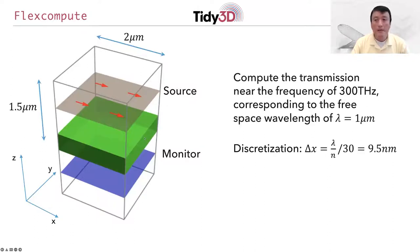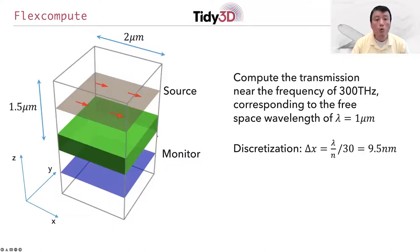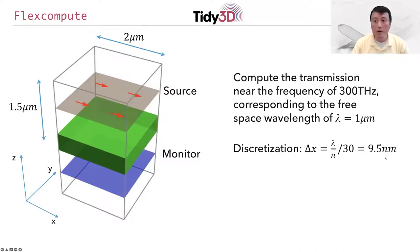However, in the next video we're going to use the same computational domain to simulate a photonic crystal slab structure, which has more complexity in the in-plane direction. So the xy dimension here is chosen with a future calculation in mind. We would discretize the computational domain in terms of a grid cell, and in our case we choose a discretization so that each grid corresponds to a linear dimension of about 10 nanometers. That turned out to be sufficient to get the accuracy that we need.